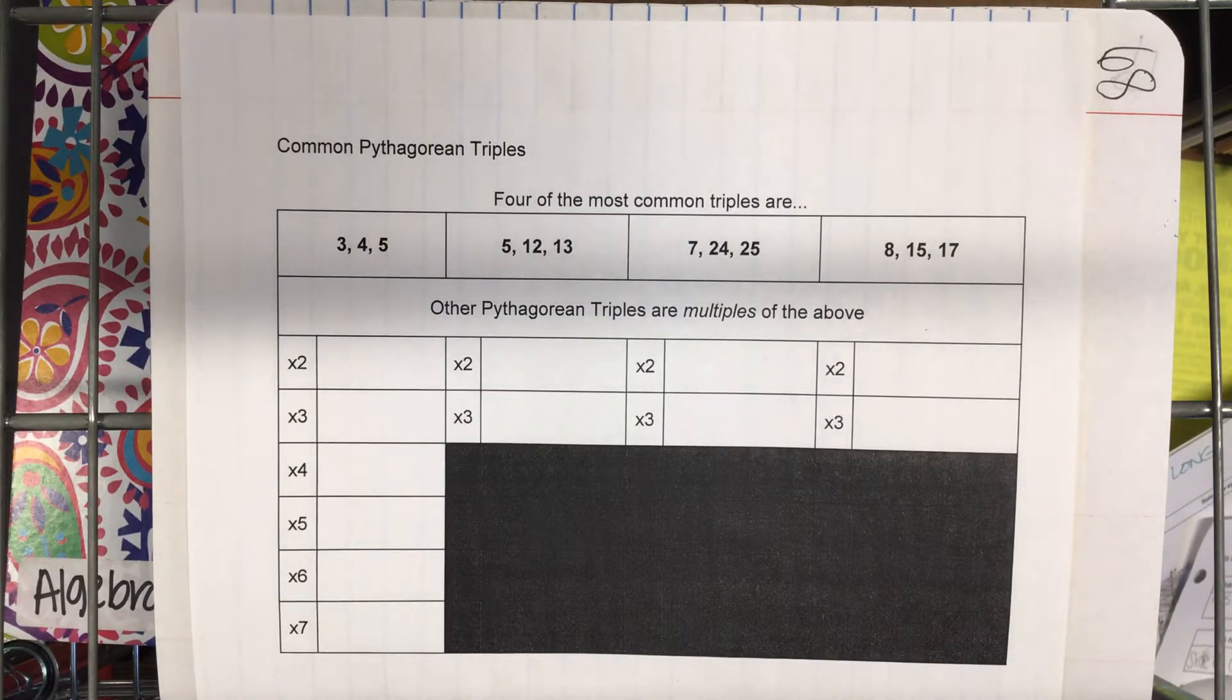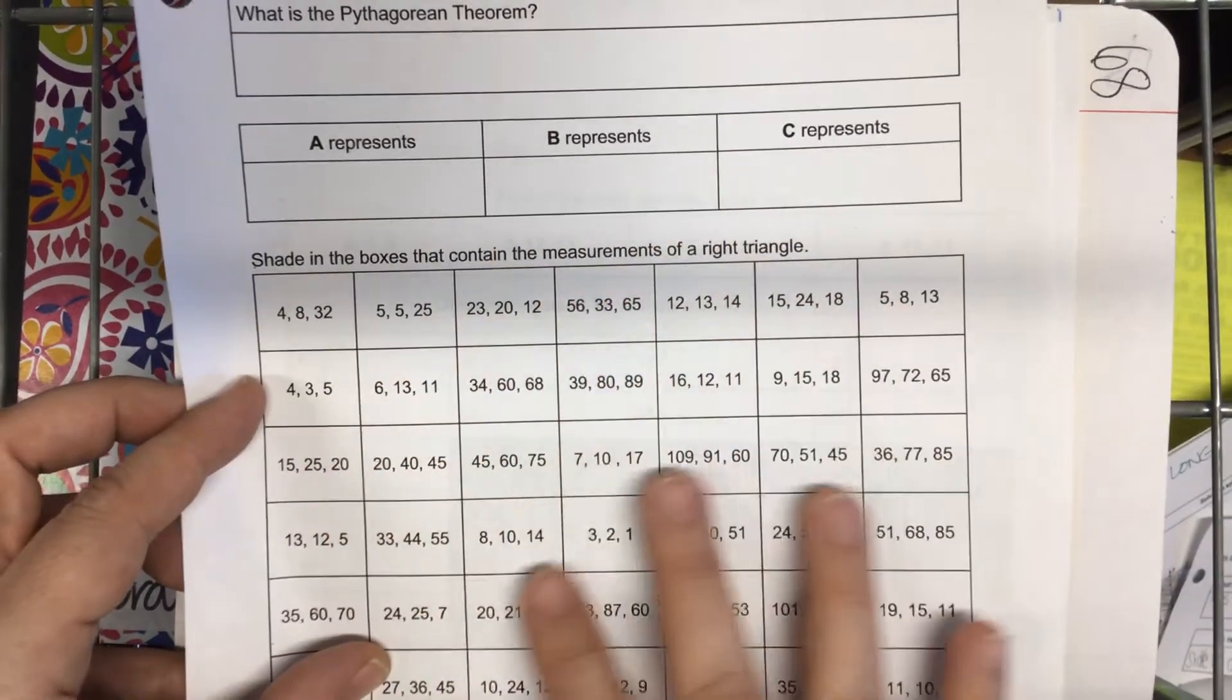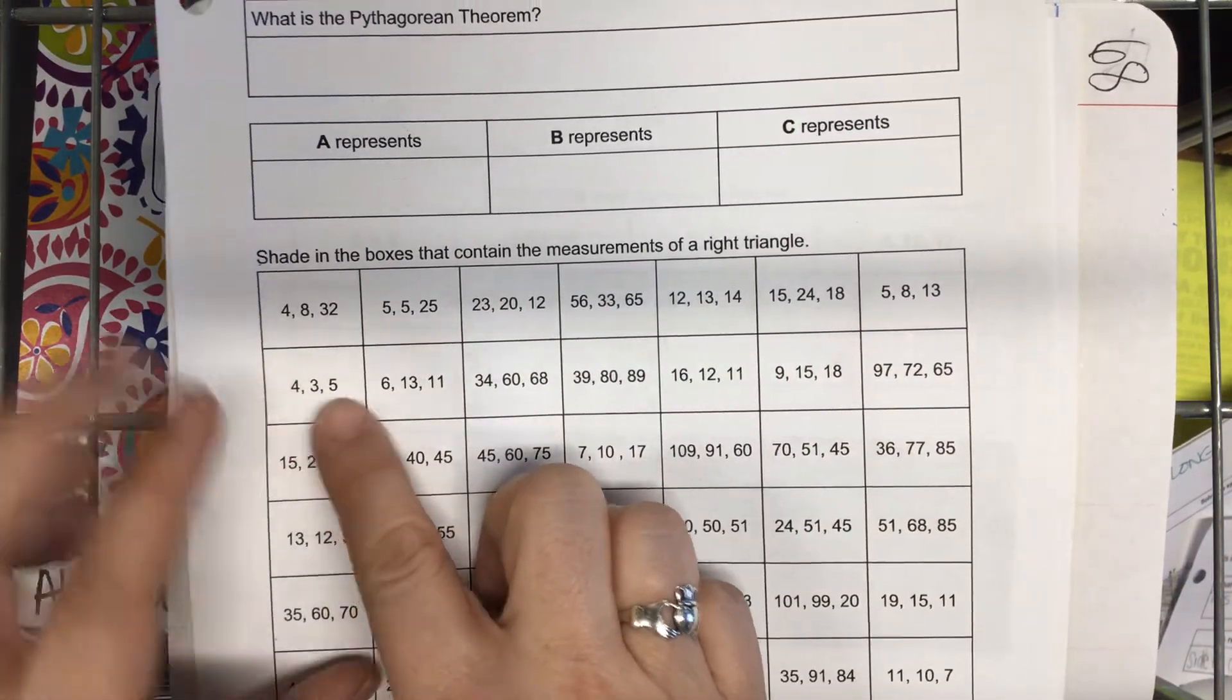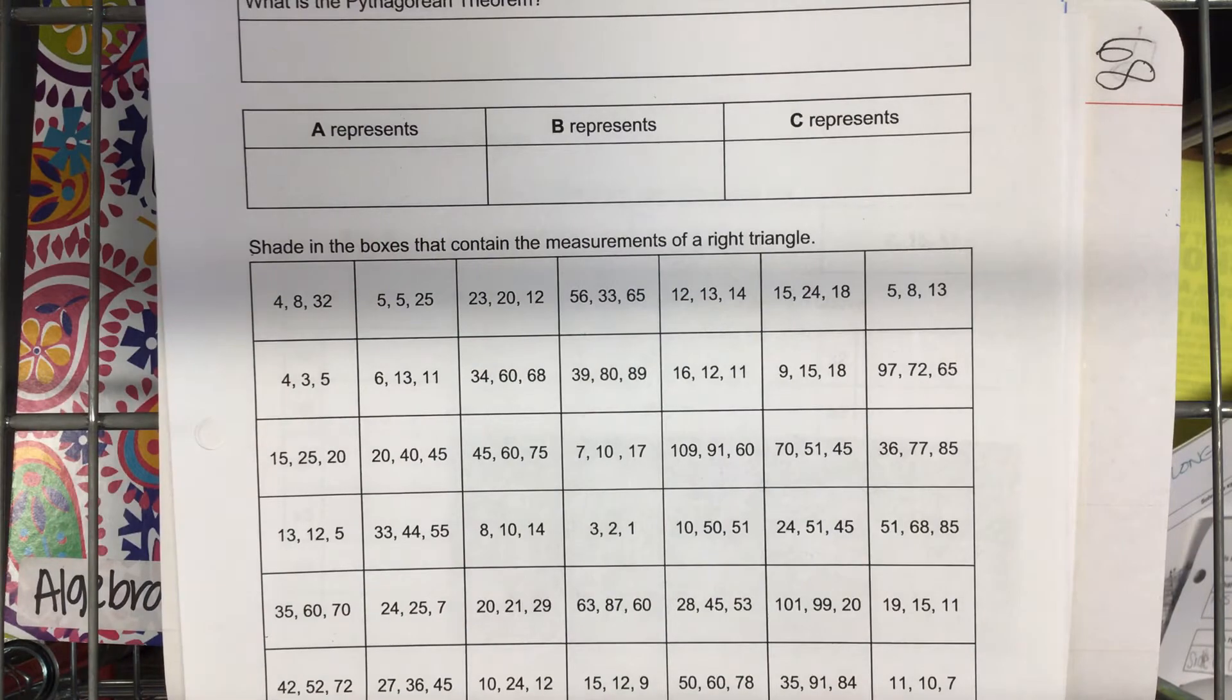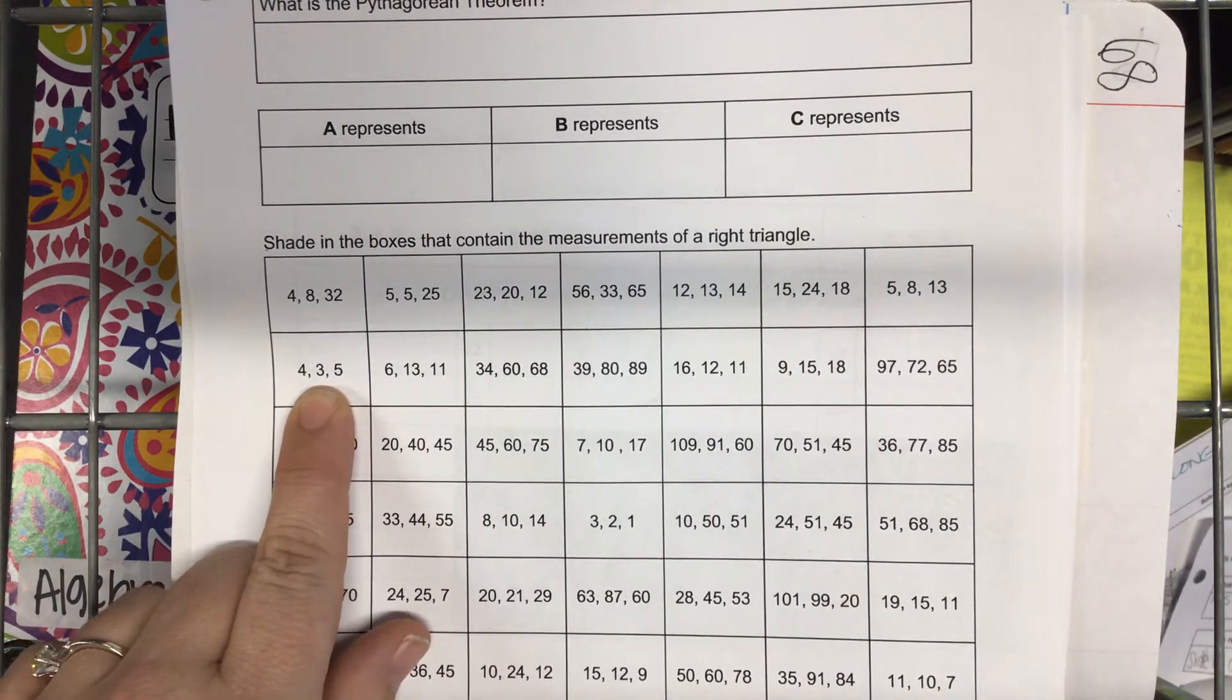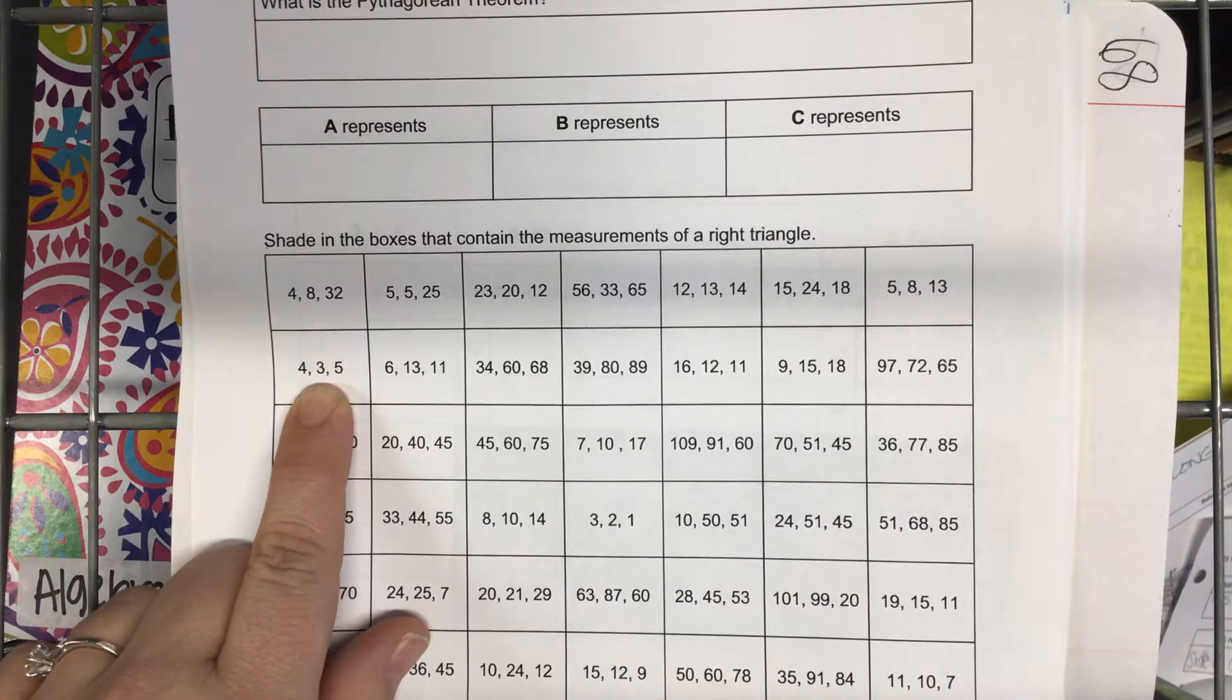If you noticed yesterday, when you were working with Pythagorean numbers, the Pythagorean theorem, you were testing, do these work? Like, these three numbers, do these three numbers make a right triangle? And remember, A is the smallest number, B is the medium number, and C is the largest number, right? And so, when you look, this A was three. Does it matter what order A and B are in? Good question. No, it does not. And we're going to talk about that today.